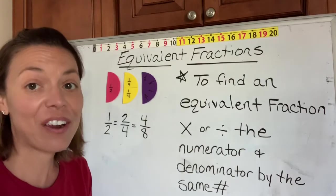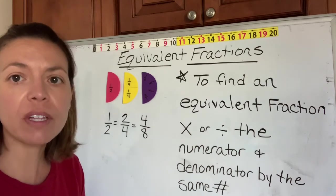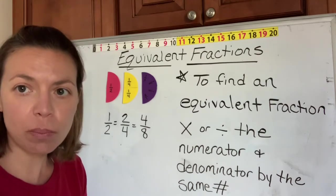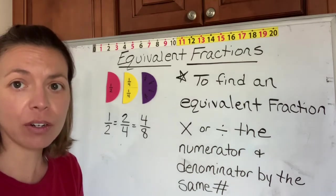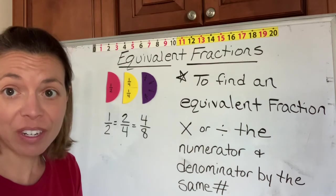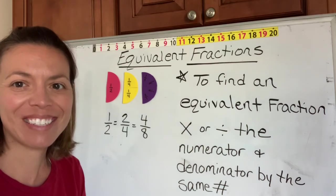All right, kiddos, to sum it up, to find an equivalent fraction, you multiply or divide the numerator and the denominator by the same number. If you can remember that, you can always make an equivalent fraction.